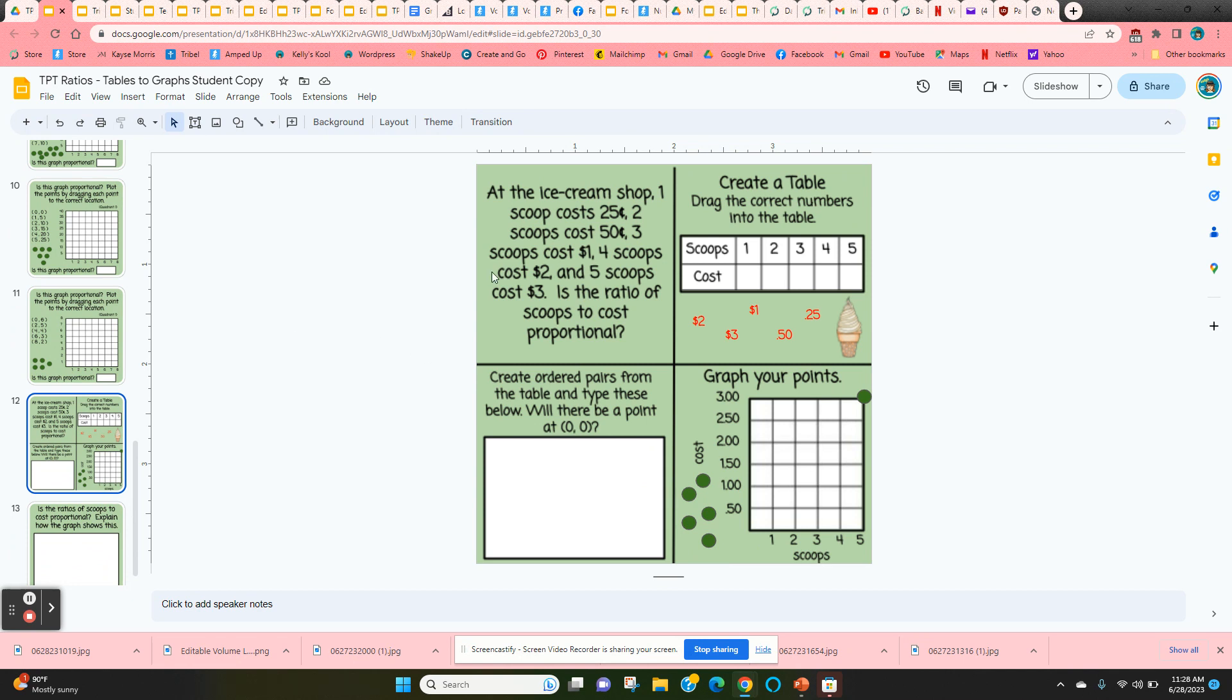When they get down to slide 12, now they have a word problem. So they're given a little scenario of an ice cream shop and how much it costs for each scoop. So students are going to drag each of these numbers into the correct place and make a table. So one scoop would be 25 cents and they just move it so that it fits right in the table. Two scoops is 50 cents, three scoops would be a dollar, four scoops two dollars, and five scoops three dollars.